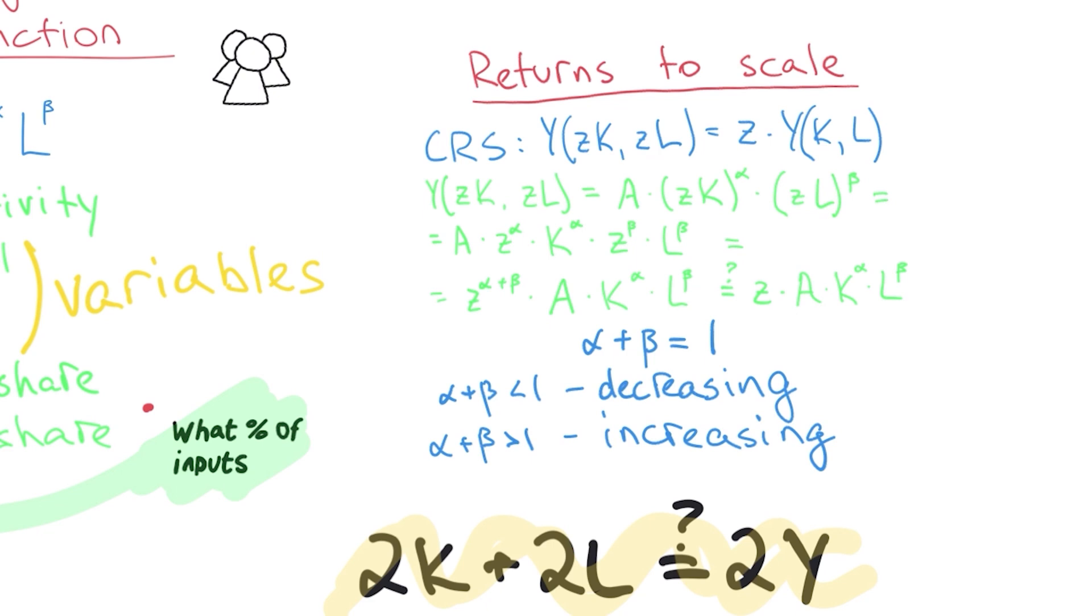But there's two other cases when alpha plus beta is less than one and when alpha plus beta is more than one. The first one is called decreasing returns to scale and the second one is called increasing returns to scale. What does this mean intuitively? So for the first one I like the example of a coal mine. If all of a sudden they decide to double their workers and double their amount of production supplies like little carts and hammers and everything, will they double the amount of coal? Probably not because there's no way they're gonna fit twice as many people in the coal mines. So they're really not gonna have the same output if they increase the input.